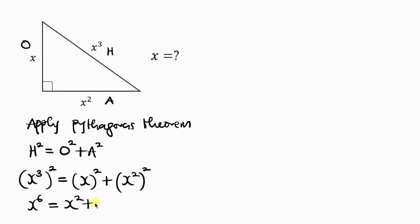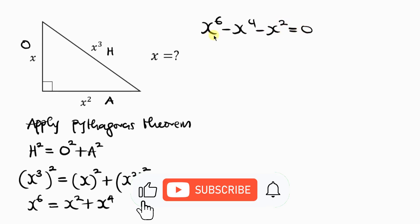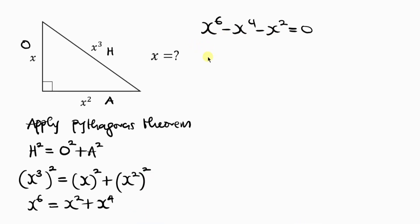So we have X to the power of 6 equal to X squared plus — remember powers multiply — so 2 times 2 gives 4, so this becomes X to the power of 4. Now let's move everything to one side. Moving everything to the left hand side, I'll be having X to the power of 6 minus X to the power of 4 minus X to the power of 2 equal to 0. Notice that X squared is common, so we can factor that out.